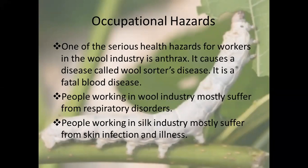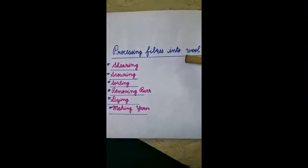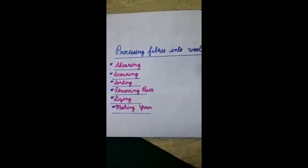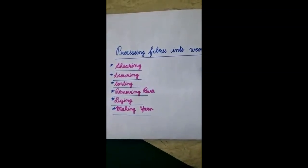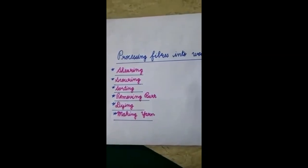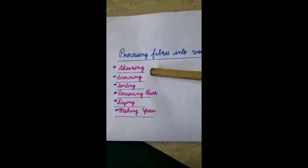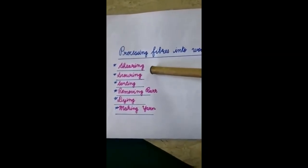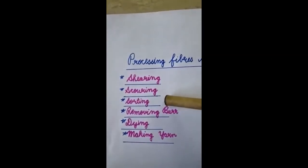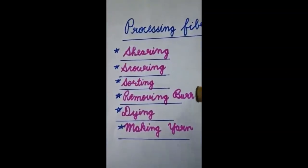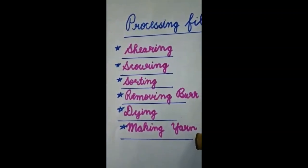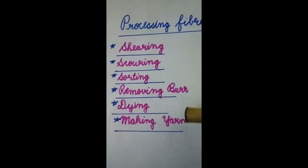Now I am going to explain in detail the steps we have to follow for extracting wool. In this video we will study the processing of fibers into wool. The wool used for knitting sweaters or weaving shawls is a finished product of a long process. The steps involved are: shearing, scouring, sorting, removing burr, dyeing, and finally the yarn is made.